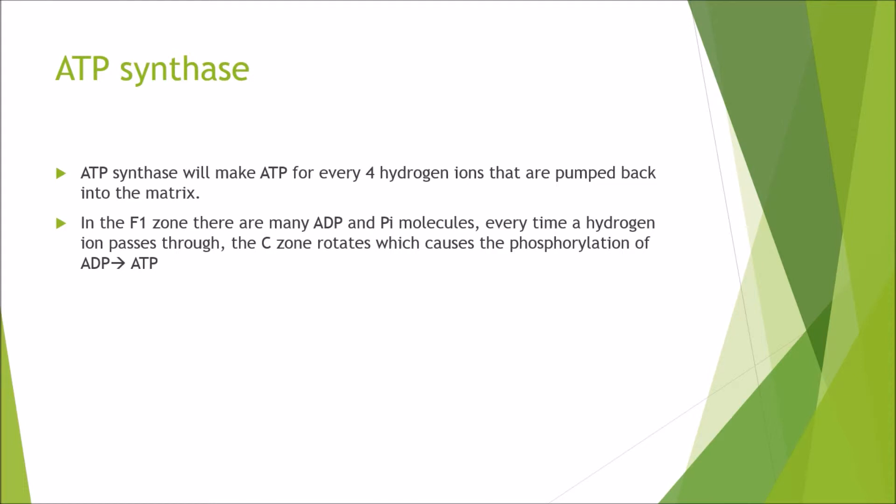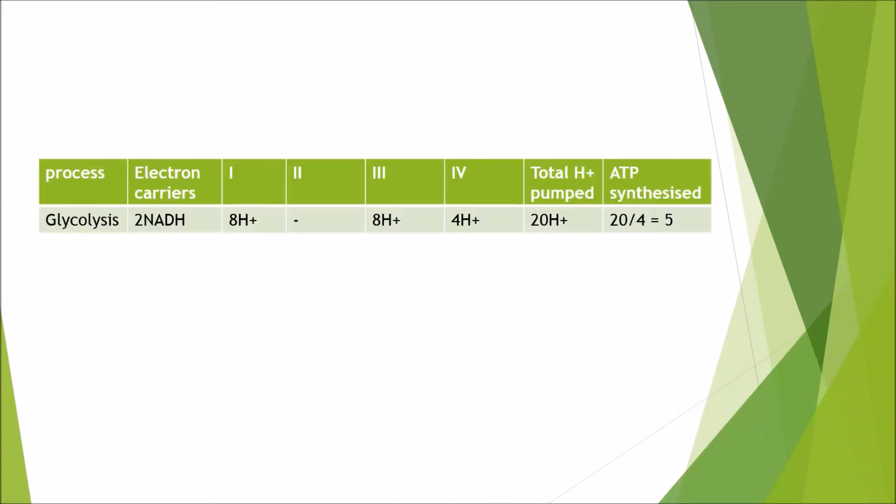ATP synthase will make ATP for every four hydrogen ions that are pumped back into the matrix. In the F1 zone there are many ADP and Pi molecules. Every time a hydrogen ion passes through, the C zone rotates, and this will help facilitate the phosphorylation of ADP into ATP. But therefore, if 10 hydrogen ions pass through ATP synthase, but remember it only needs four hydrogen ions to pass through to make one ATP, that therefore means 2.5 ATP molecules are synthesized for every single NADH molecule.